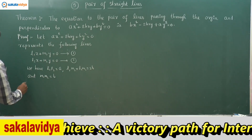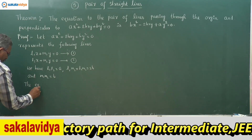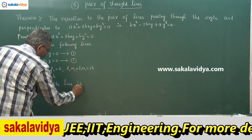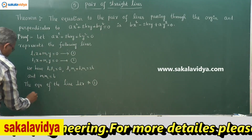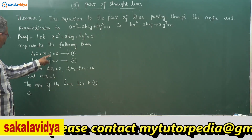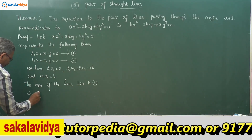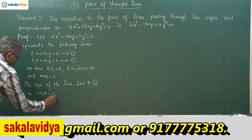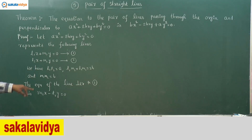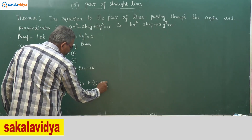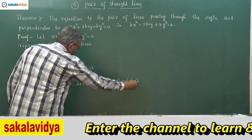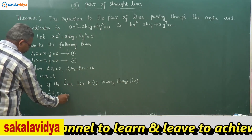The equation of the line perpendicular to equation 1 is found by a simple logic: replace l₁ by m₁ and change the sign. So we get m₁x - l₁y = 0. This passes through the origin. The equation of the line perpendicular to equation 1 and passing through the origin (0, 0) is m₁x - l₁y = 0, say equation 3.